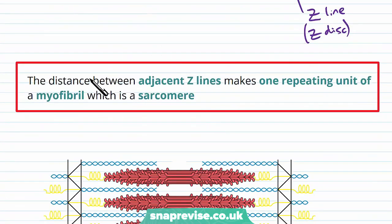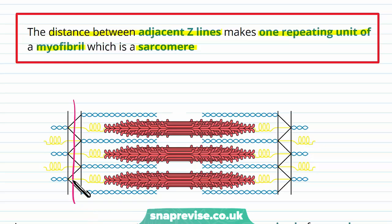So summing all this up, the distance between adjacent Z lines makes one repeating unit of a myofibril, which is a sarcomere. So essentially, from one Z line all the way to the next Z line, the combination of the I bands, the A bands and the H zone makes up one whole sarcomere.